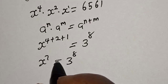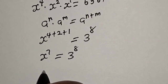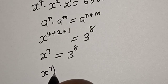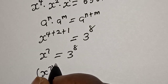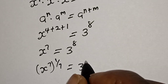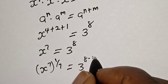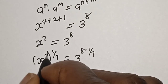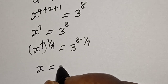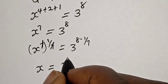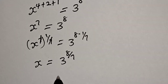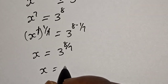Then let's multiply the exponent of both sides by 1 over 7. That is s raised to power 7 times 1 over 7 is equal to 3 raised to power 8 multiplied by 1 over 7. This will cancel, and s is equal to 3 raised to power 8 over 7.